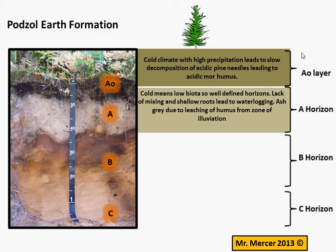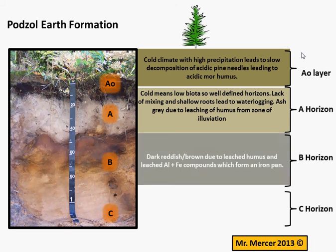The shallow roots of the trees mean that water isn't readily drawn back up to the surface by capillary action, and therefore it's likely to be waterlogged. The ash grey colour is due to the high levels of leaching, because of the high level of precipitation, and that washes the humus down into the B horizon.